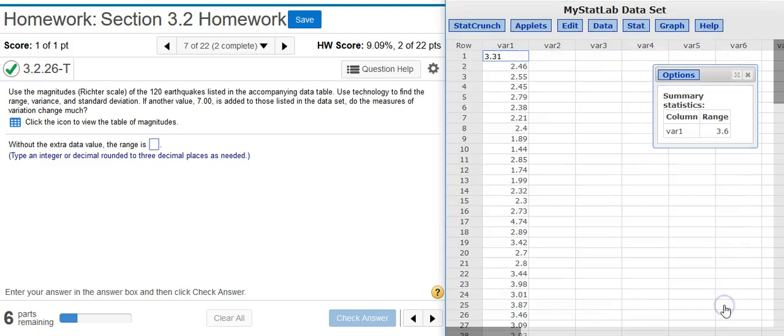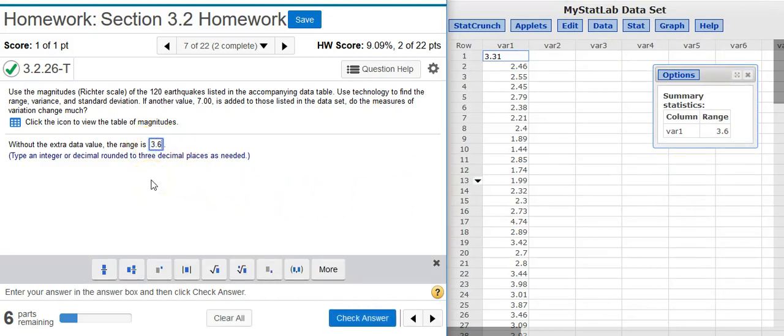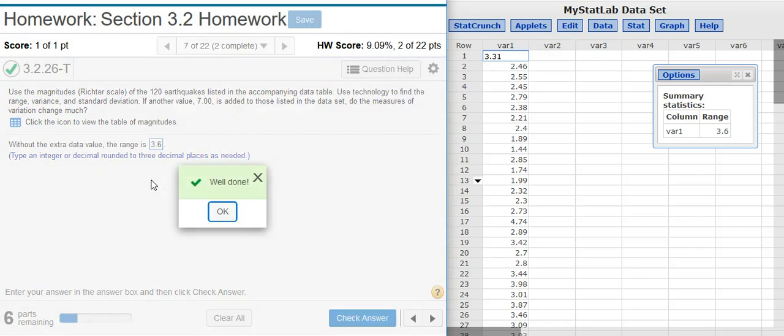Then I press Compute. And there's my range. I'm asked to round to three decimal places, which in this case is no big deal. Well done!